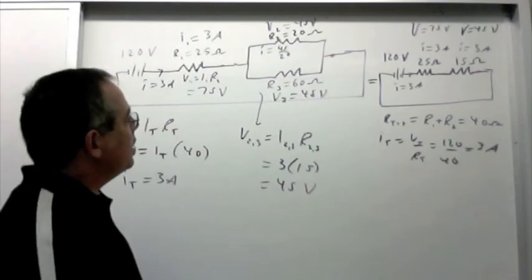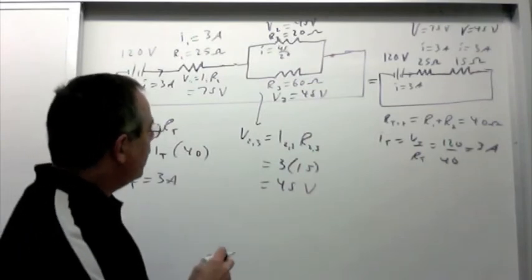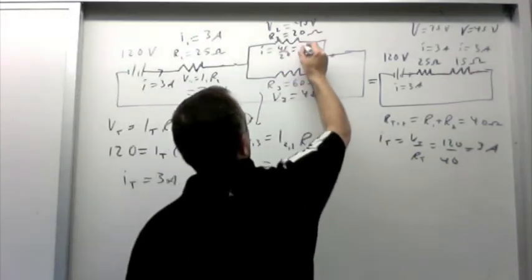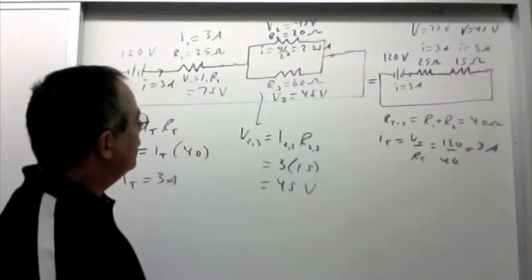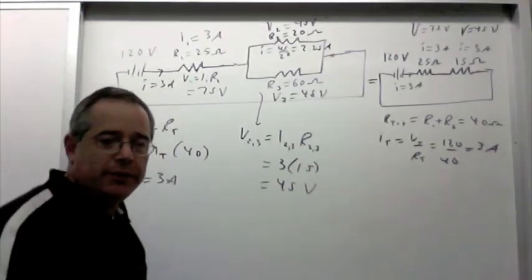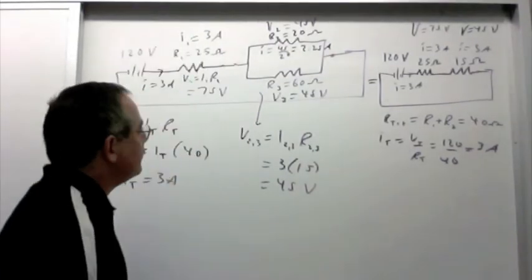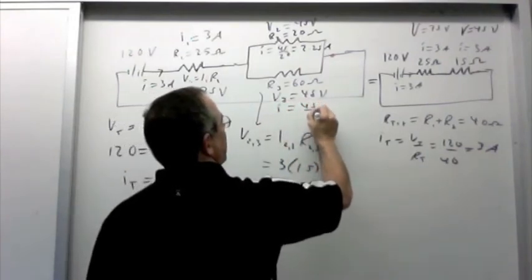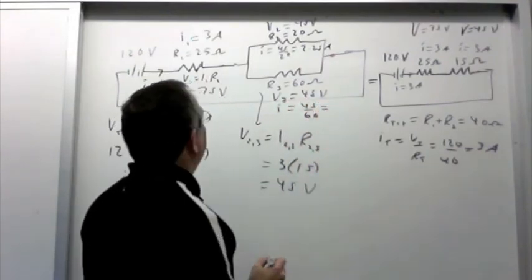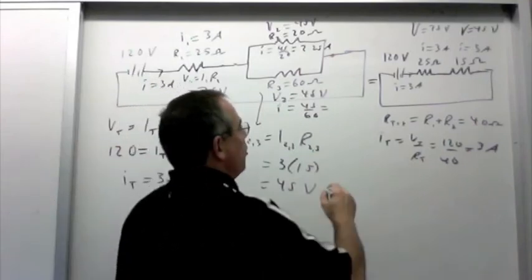That would be 2.25 amps. Yeah. 2.25 amps. Down here, the current is 45 over 60. And I'm not even going to compute that. I know that's 0.75 amps.